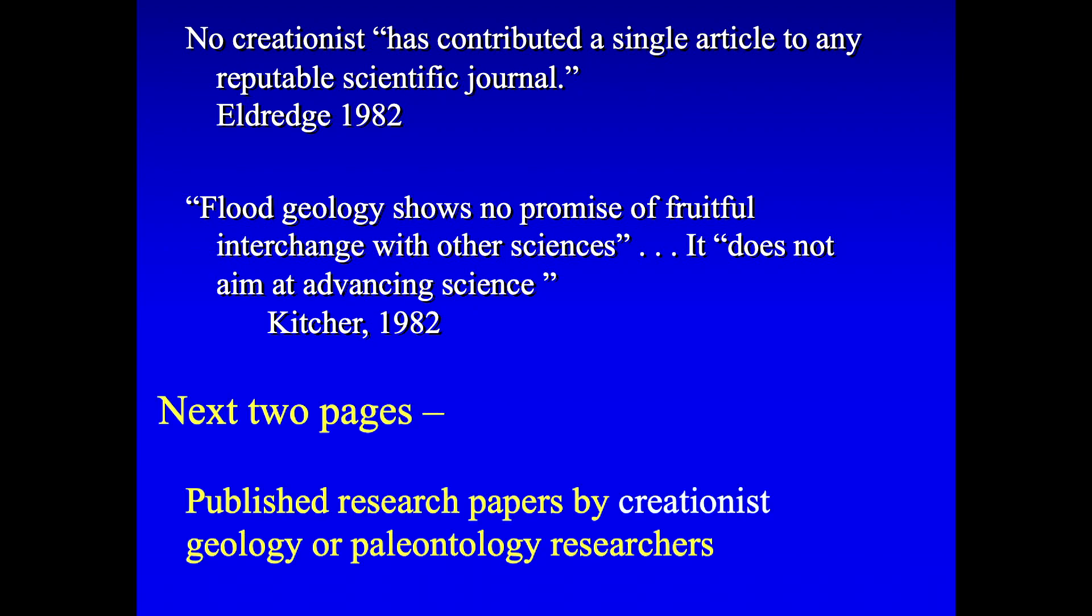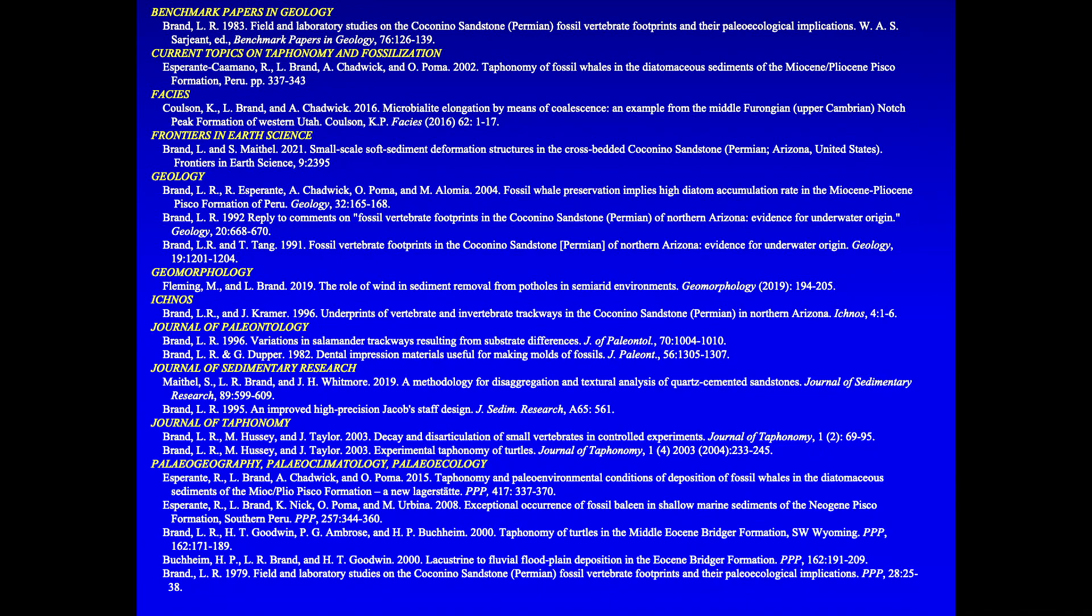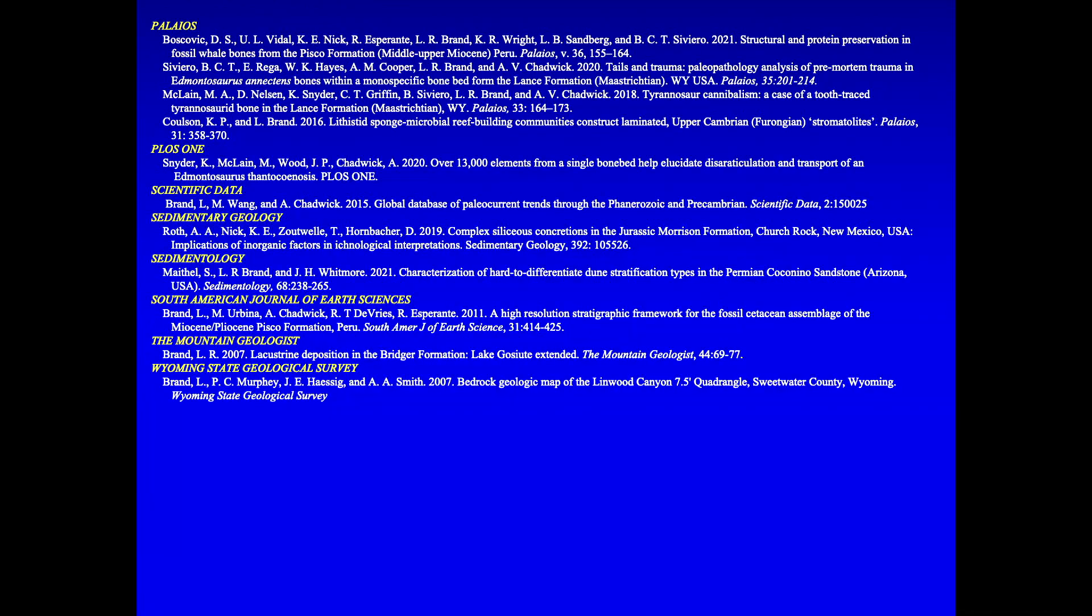So, the next two pages are just a list of published research papers by creationists, geologists, or paleontology researchers. Okay, so, each of the yellow labels is the name of a journal. And then the smaller type is individual articles. You can't read those, but I could show the list later if you want. So, there are 20 some. These are mostly myself and my graduate students and other collaborators. And there are a few other people who are in some of these journals, these articles. So, all of these are done by creationists. So, there's no question that we can do good research and get it published if we're lucky.